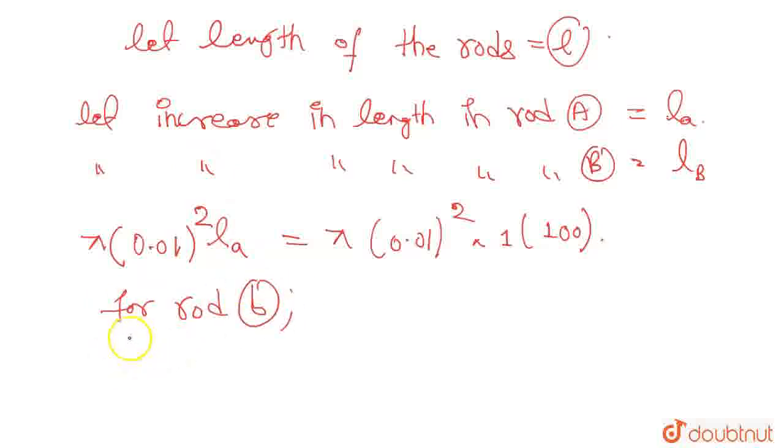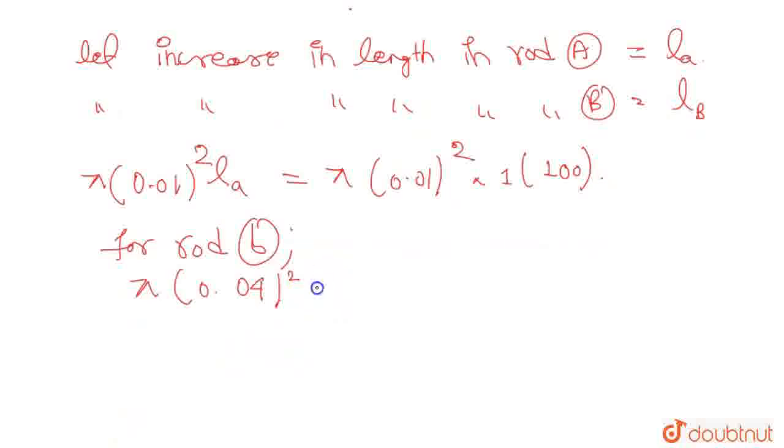Now for rod B, this will be equal to pi into 0.04 square into LB, this will be equal to pi into 0.04 square times 1 into 100. Okay, this will be 0.02 because two centimeter diameter. Yes, now moving forward.